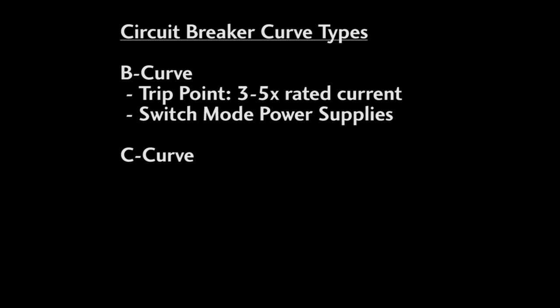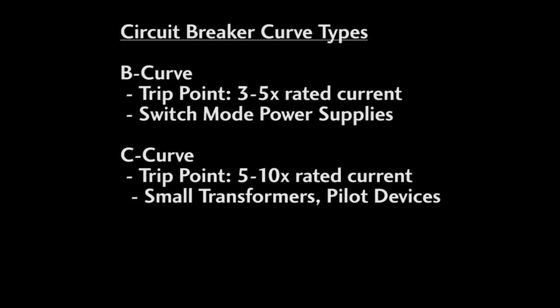The C curve has a trip point of 5 to 10 times the rated current. These are general purpose and great for small transformers and pilot devices.